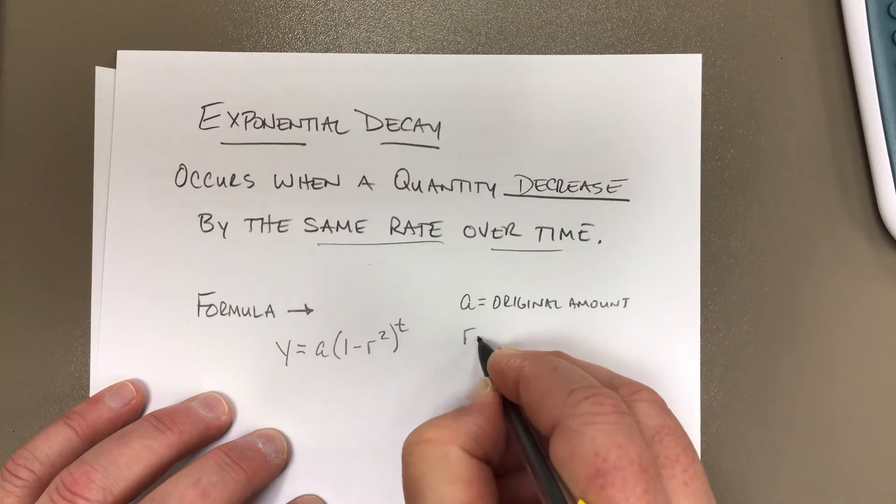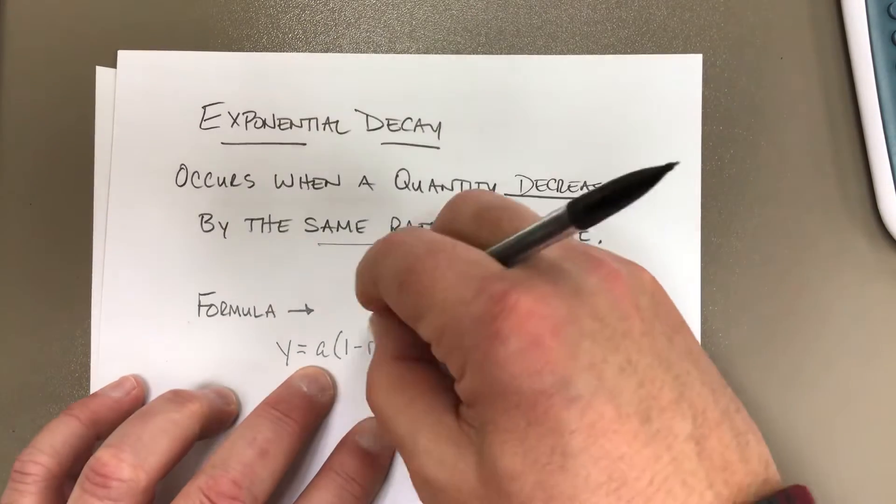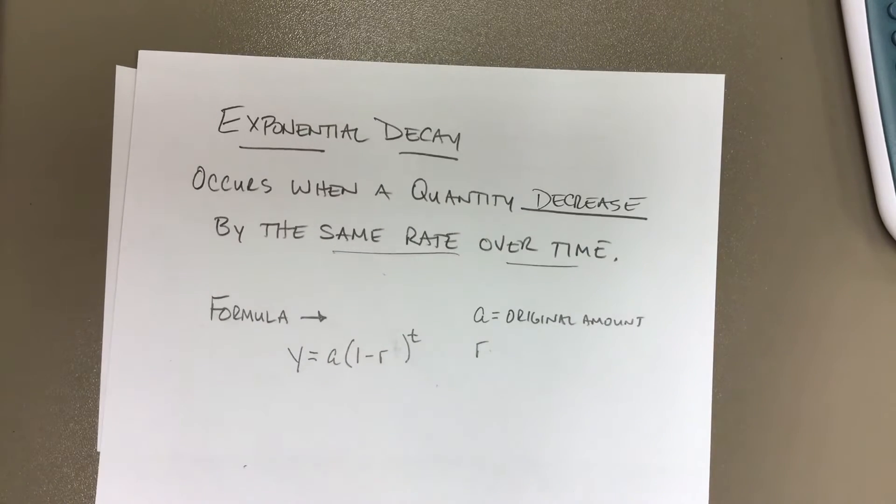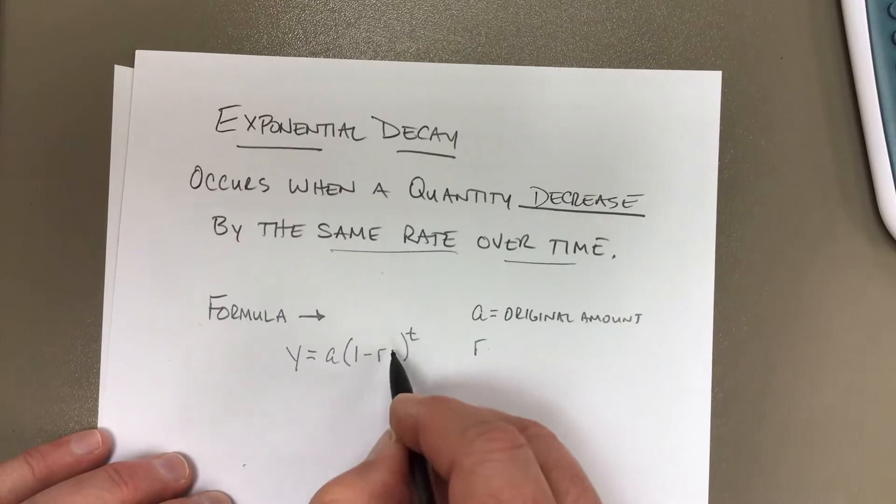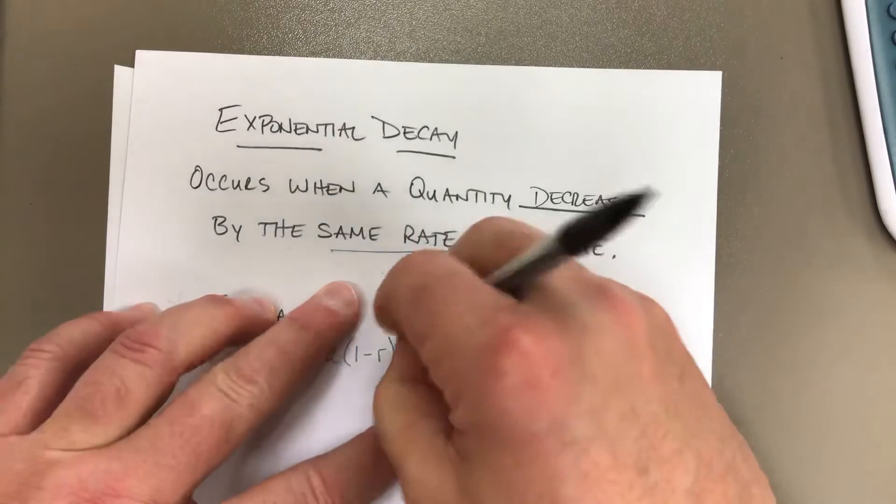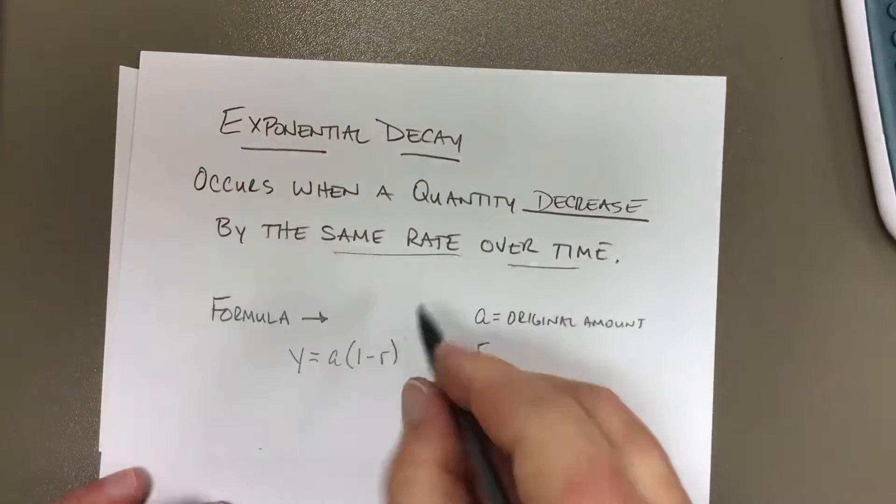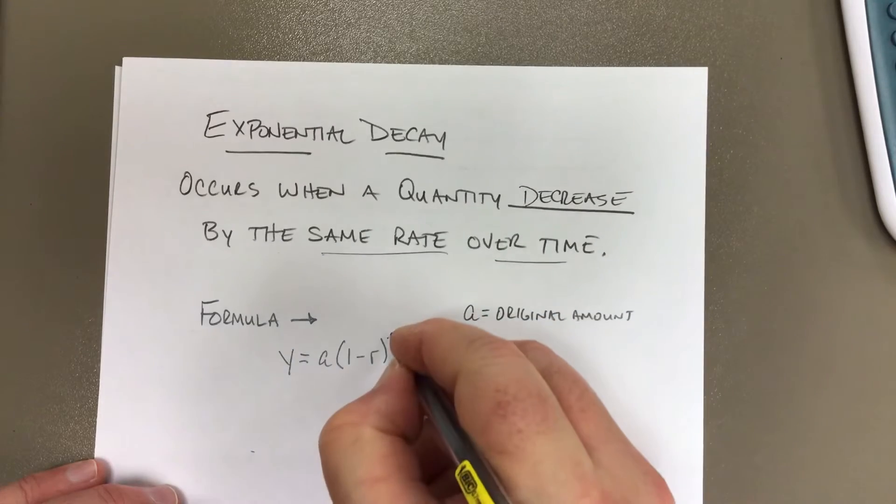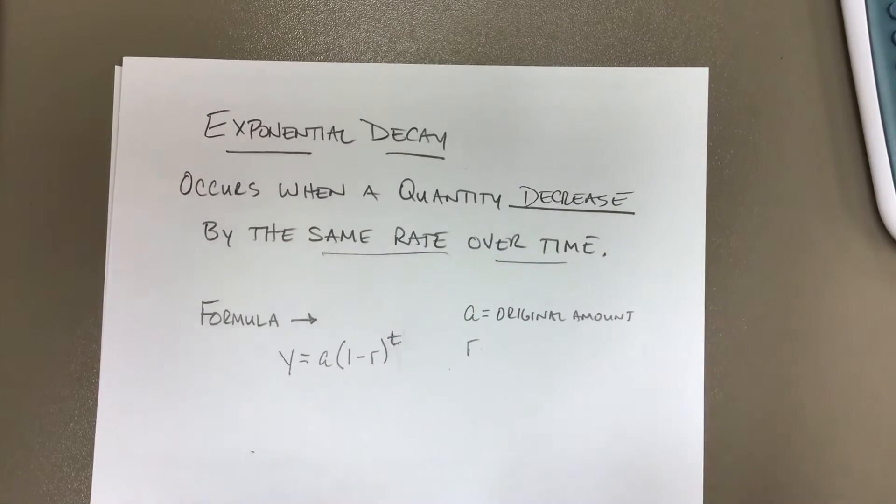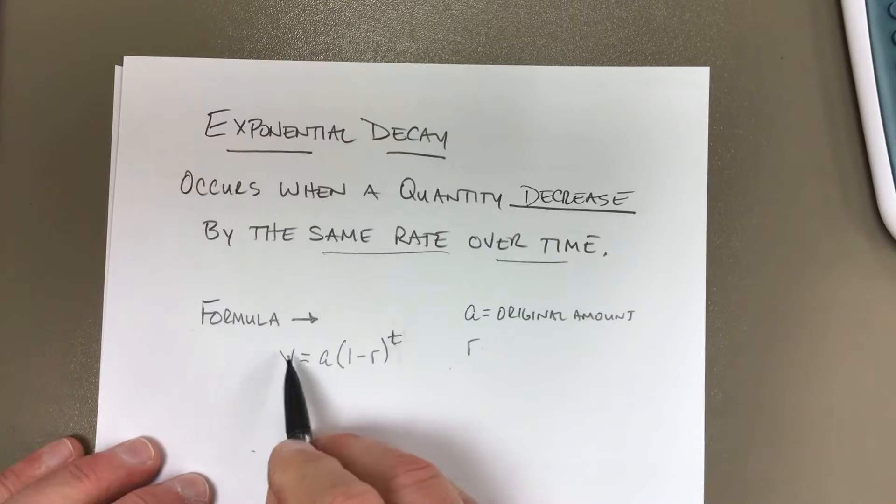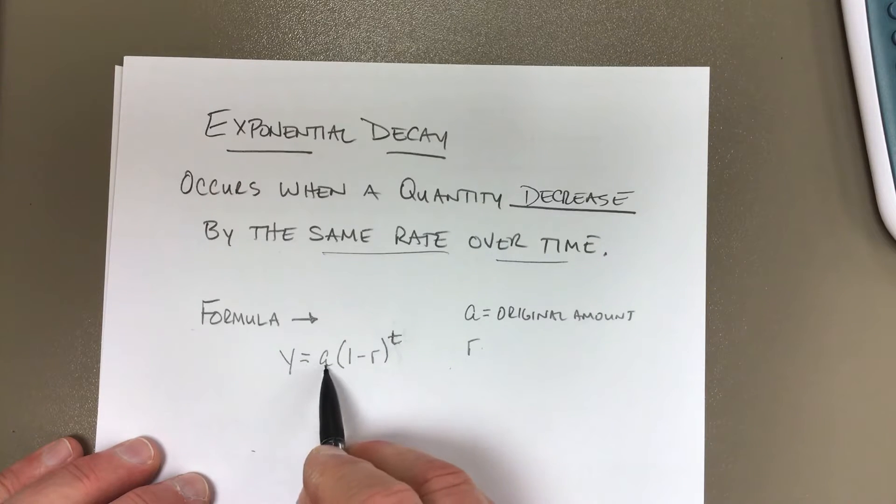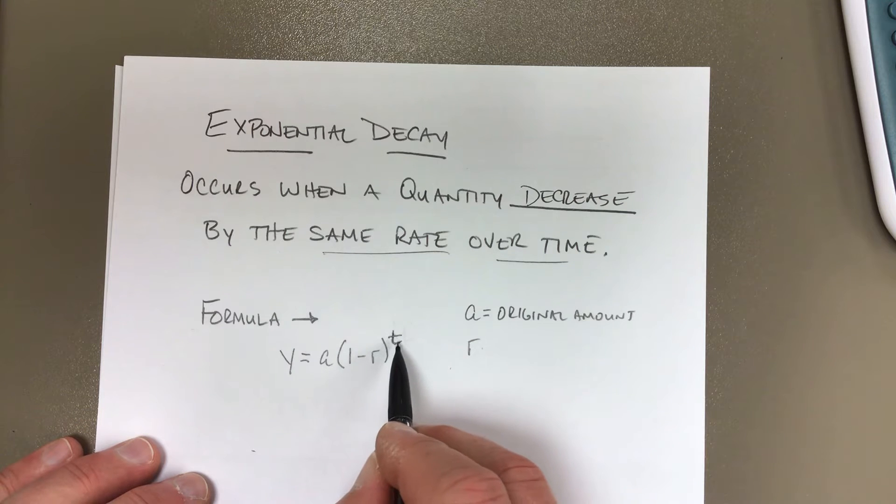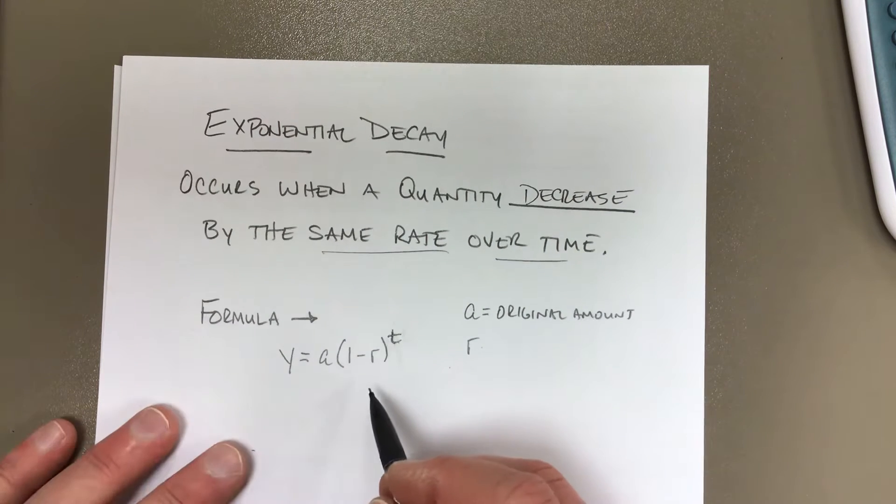The r, I don't know why I put a square there. Sorry folks, I'm not sure where that square came from. It's just 1 minus r to the t power. All right, so let's start over here again. So the formula is y equals a times the quantity of 1 minus r raised to the t power.